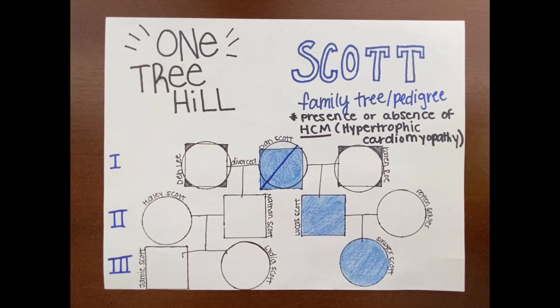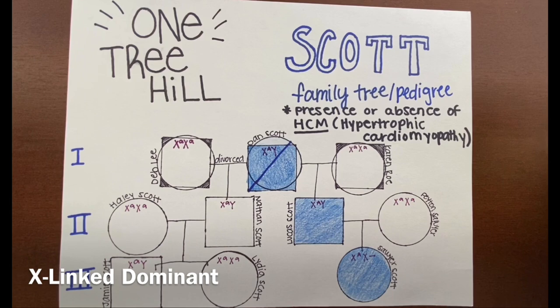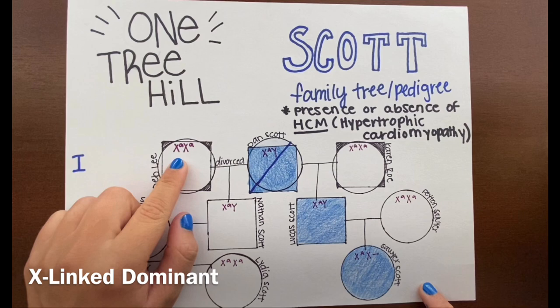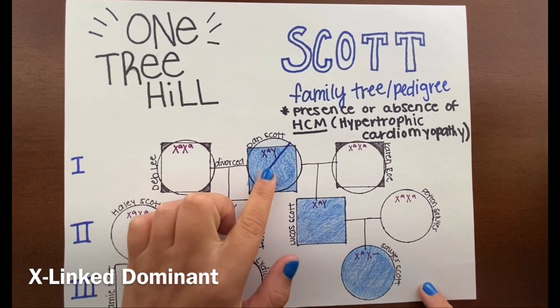I'm going to start by testing for the X-linked dominant mode of inheritance. I filled in all the genotypes that I knew. All of the females who did not show the phenotype had to have X little a, X little a. All the males who did have it had X big A, Y, shown here.